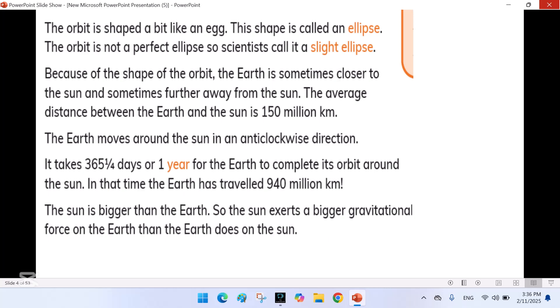The orbit is shaped a bit like an egg. This shape is called an ellipse. The orbit is not a perfect ellipse, scientists call it a slight ellipse.